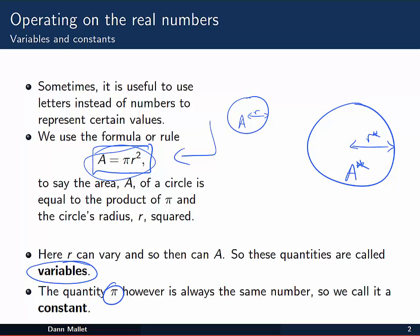On the other hand, the number pi, 3.1415 and so on, is always the same number, it can't change. So we refer to that number, and numbers like it, as constants. We'll be seeing variables and constants popping up all over the place. So it's important to know the difference between them, because they're going to work in different ways and have different rules that apply to each of them.